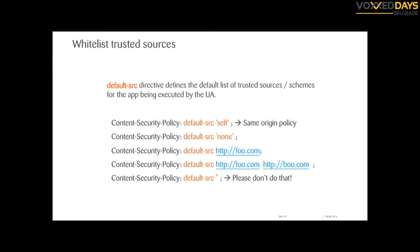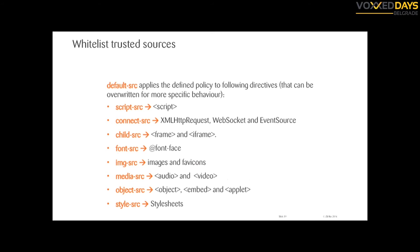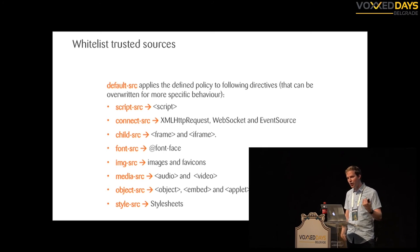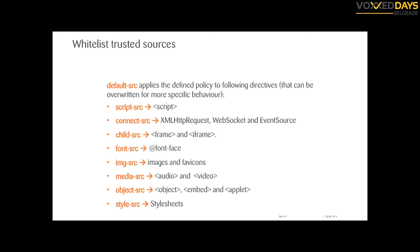I recommend using 'self,' and then you can overwrite it with more explicit directives depending on content type. Once you've defined the default source, for script tags you can add a CDN. For connect-src, Ajax requests or WebSockets, you can define which URLs you trust. For iframes, you can whitelist content sources. For fonts if you use a CDN, images, media, objects, and styles — it's always the same approach: define very explicitly what you want to whitelist.